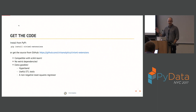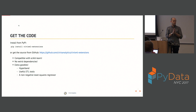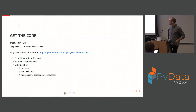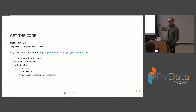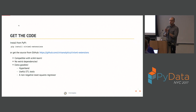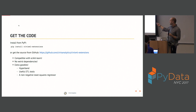If you want to get the code and play along at home, we would love for everyone here to download this, try it, file bug reports, ask for future requests, et cetera. You can get it from the Python Package Index: pip install civis-ml-extensions. If you want the source, it's free open source software. You can clone it from our GitHub. All the stuff in this repo is compatible with scikit-learn.